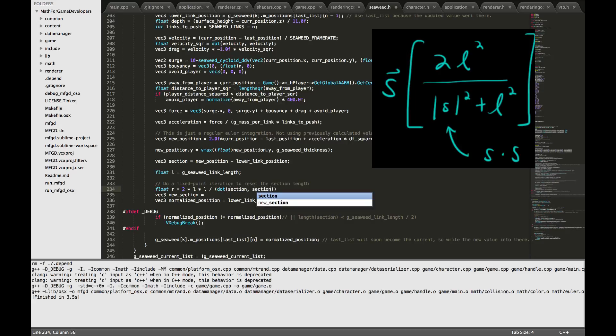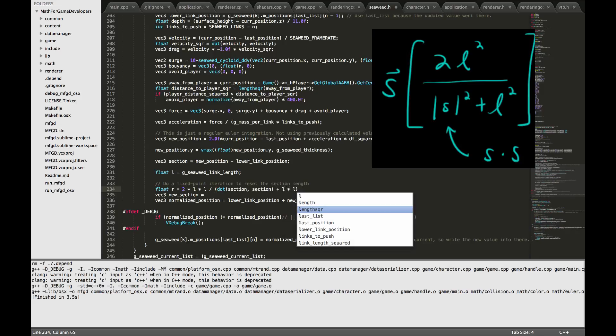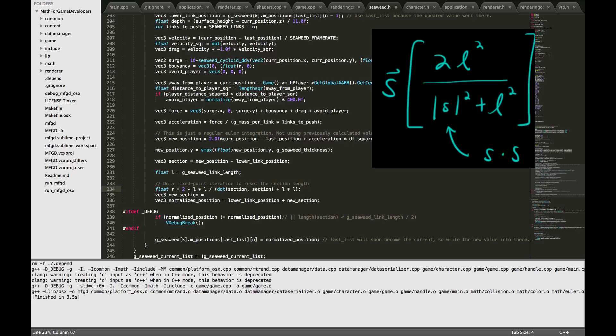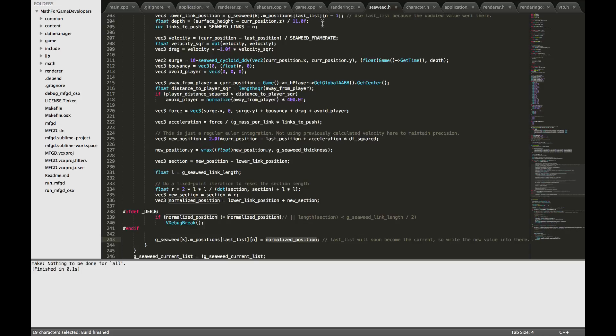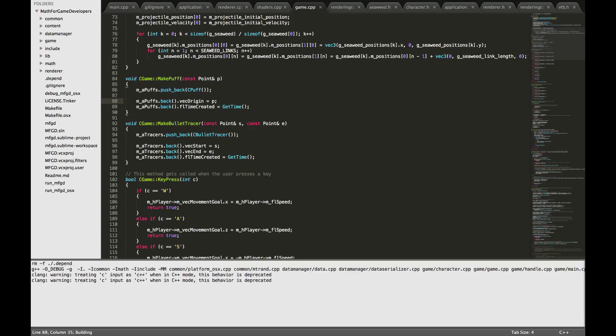And then finally plus L squared. So that gets us the part in the square brackets, which is a floating point number, which is a scalar value. And in order to get the new section length, we have to take the old section length and multiply by that scalar number. And then we can continue with the rest of the calculations. We have the new section length, so we add it to the lower link position to get the new normalized position, and then we update that. And so this should be everything that we have to do. Let's build it and run over to the debugger and run it.